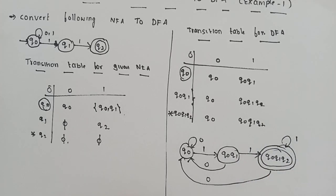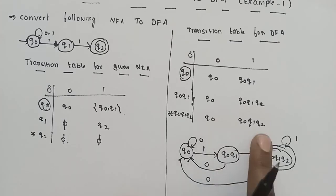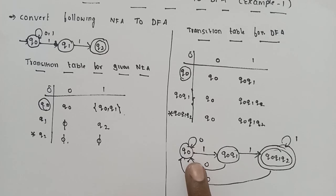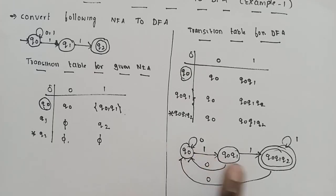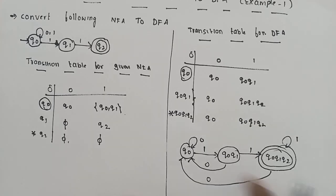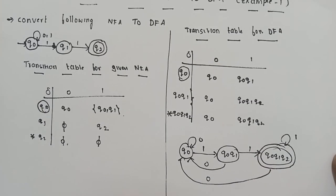Now we have the complete DFA constructed from the given NFA. The DFA has the same input symbols. The states share the same transition conditions derived from the NFA. We will discuss the next example and draw the DFA diagram in the next video.